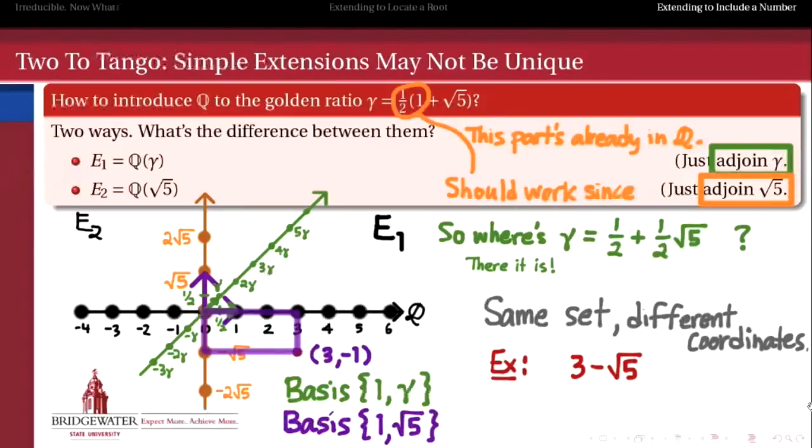What are the coordinates of that point in the green basis, the basis of E1, Q adjoin gamma? Well, we can find that as well as 4 comma negative 2. How do we know that that's true? Because 4 times the first basis vector 1 plus negative 2 times the second basis element gamma gives us exactly 4 times 1 minus 2 times 1 half plus radical 5 over 2. That's gamma.